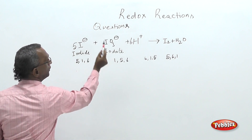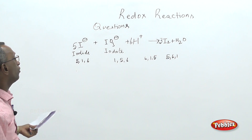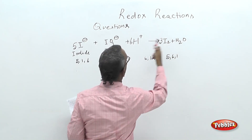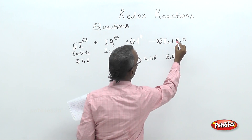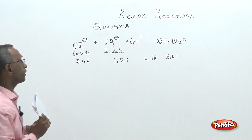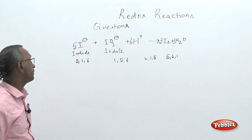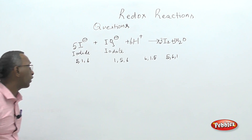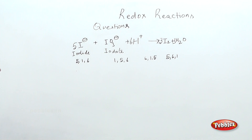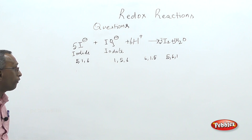With 5 iodide and 1 iodate, we get 6 iodine atoms total, forming 3 I₂ molecules on the product side. The 6 H⁺ provides 6 hydrogen atoms, which combine with the 3 oxygen atoms from iodate to form 3 H₂O molecules.